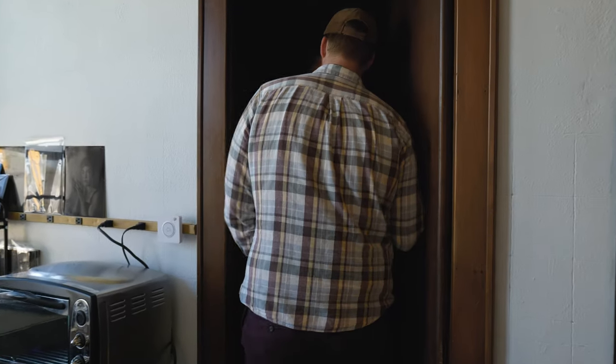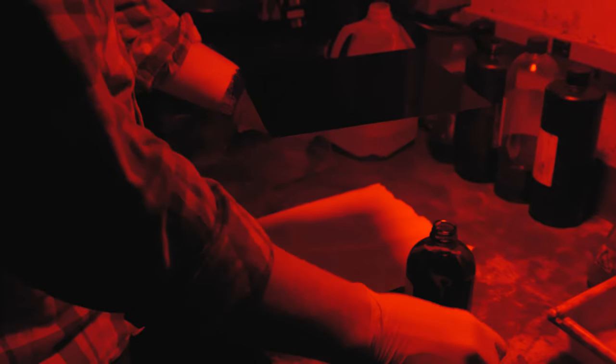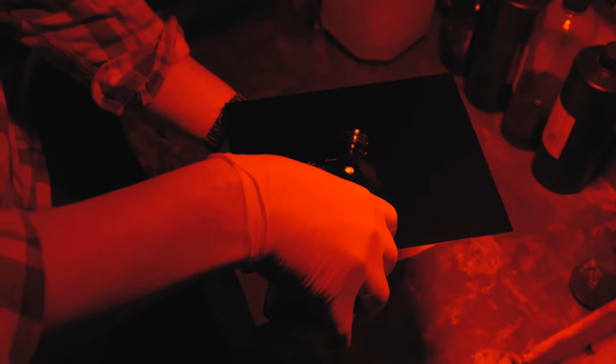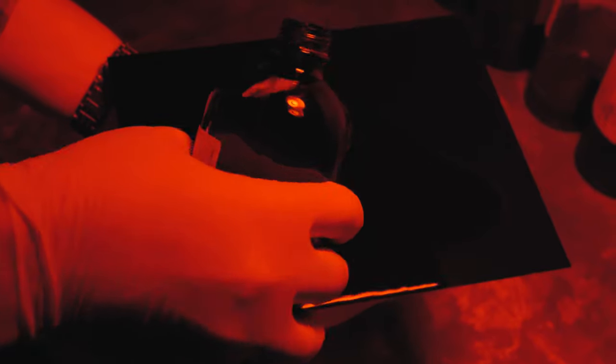So now we go into the dark room and this is where the fun stuff starts to happen. We take a piece of metal and we coat it with this substance called collodion and the collodion is going to create sort of a gelatin on the surface of the metal plate.